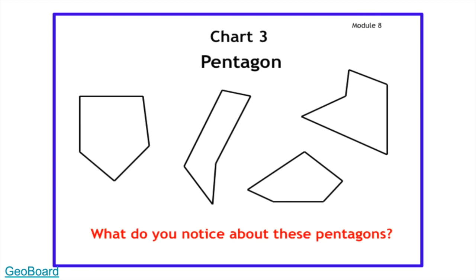Now let's count the angles on each pentagon: one, two, three, four, five — one, two, three, four, five angles — one, two, three, four, five — and one, two, three, four, five angles. All pentagons have five sides and five angles.